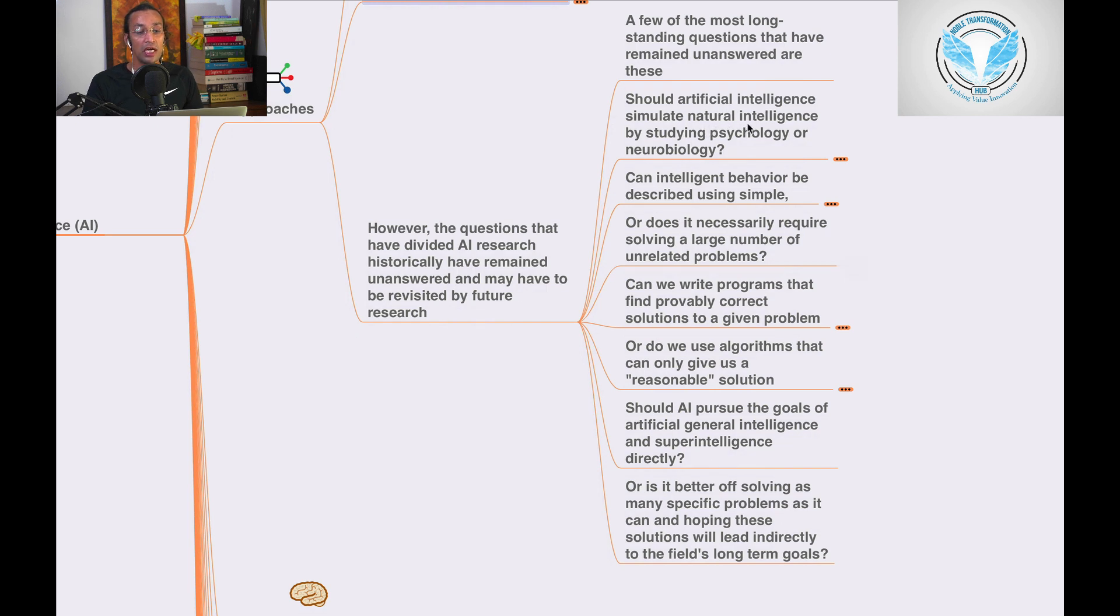Should artificial intelligence simulate natural intelligence by studying psychology or neurology? Or is human biology as irrelevant to AI research as bird biology is to aeronautical engineering?